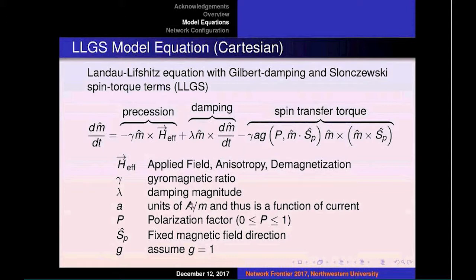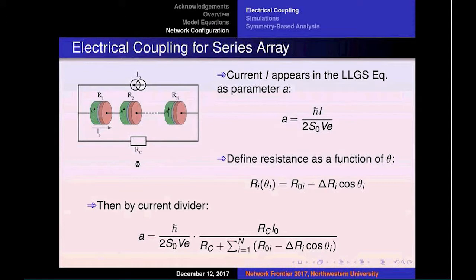A is basically where the input current is. The coupling that occurs in the ferromagnetic materials is basically through this element A.